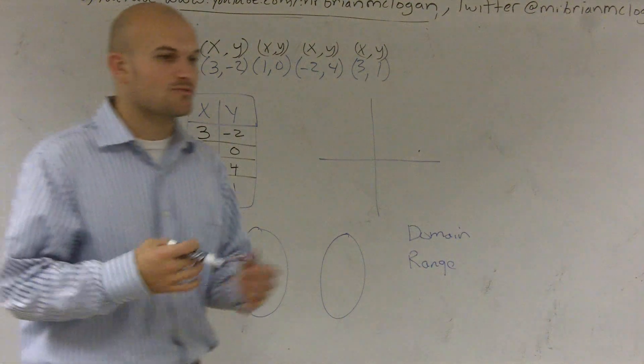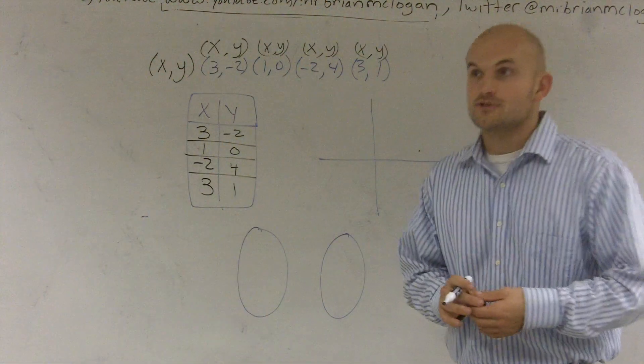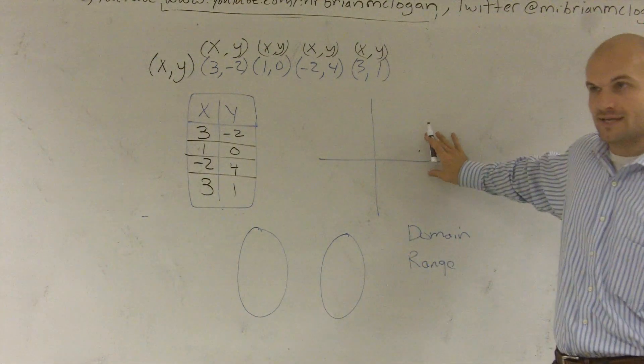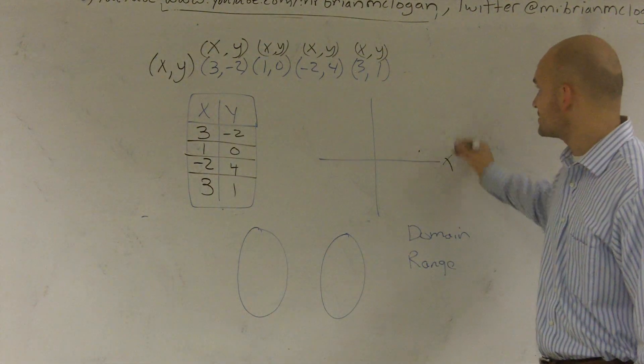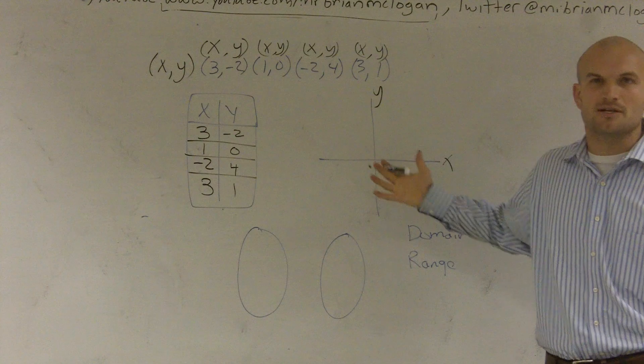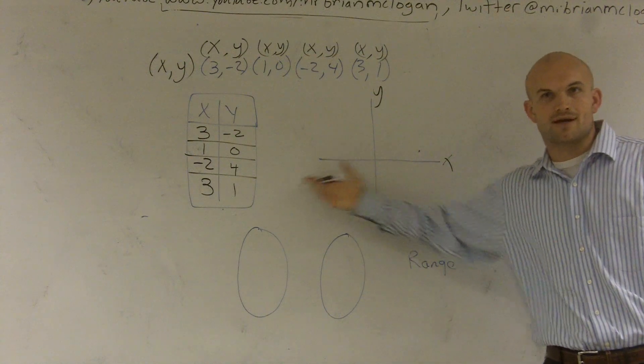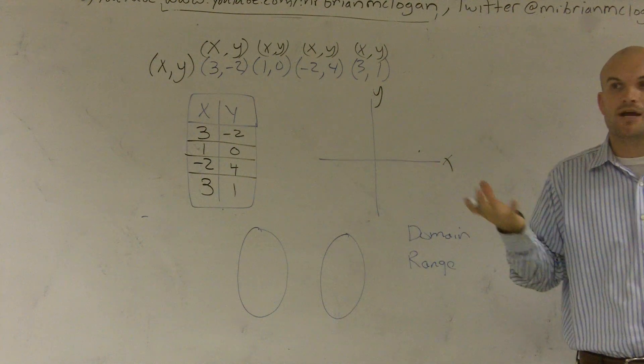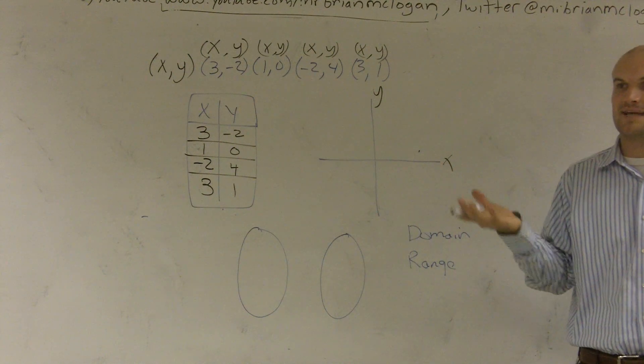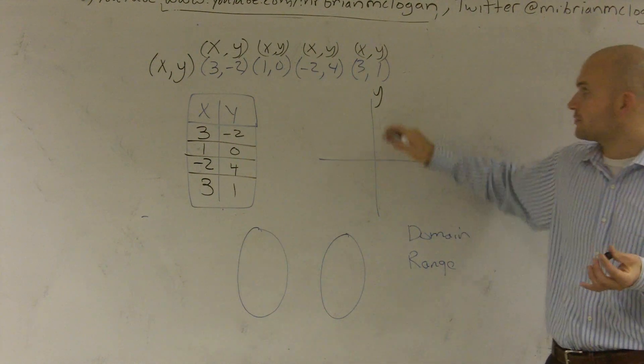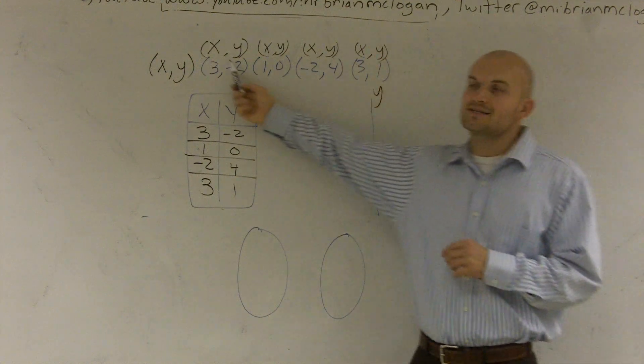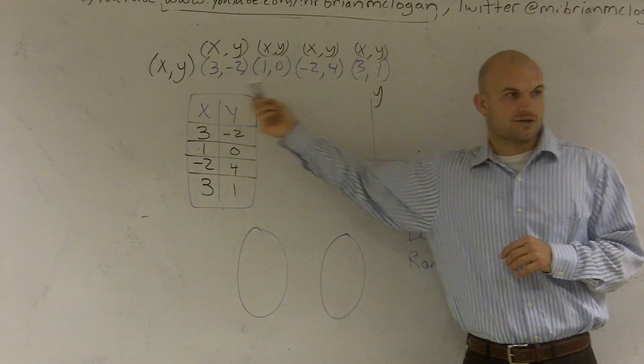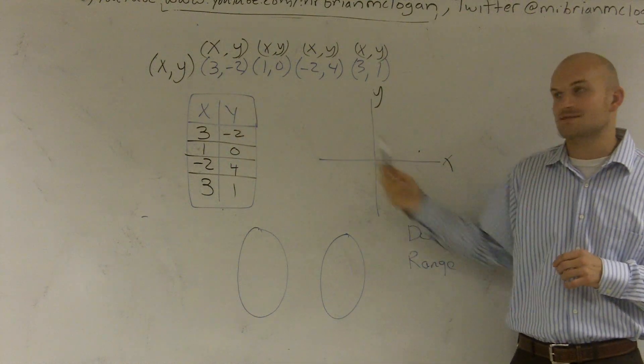The next thing it says is to represent it as a graph. Now we need to plot our coordinate points. When given an X-axis and a Y-axis, remember we just talked about number lines. This is a number line this way, and this is just really like another vertical number line. When we bring them together, they have that certain relationship where an ordered pair makes a coordinate point.